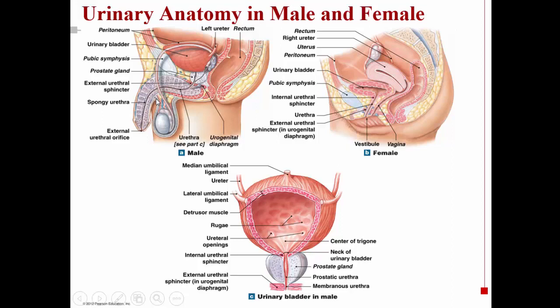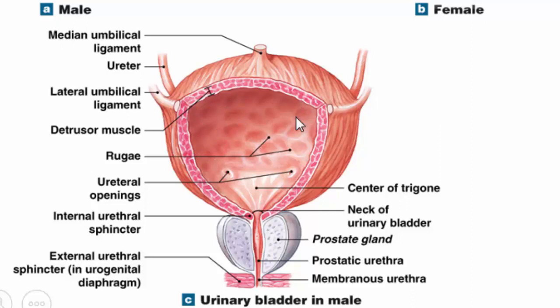Now let's take a look at the bladder — this is an anterior view. You can see two ureters emptying into the bladder posteriorly. On the inside of the bladder are wave-like structures called rugae. You'll remember that rugae are found in the empty stomach — they are wave-like formations of the mucosa, also found on the roof of the mouth. When the bladder is empty, these wave-like structures serve to increase the surface area.